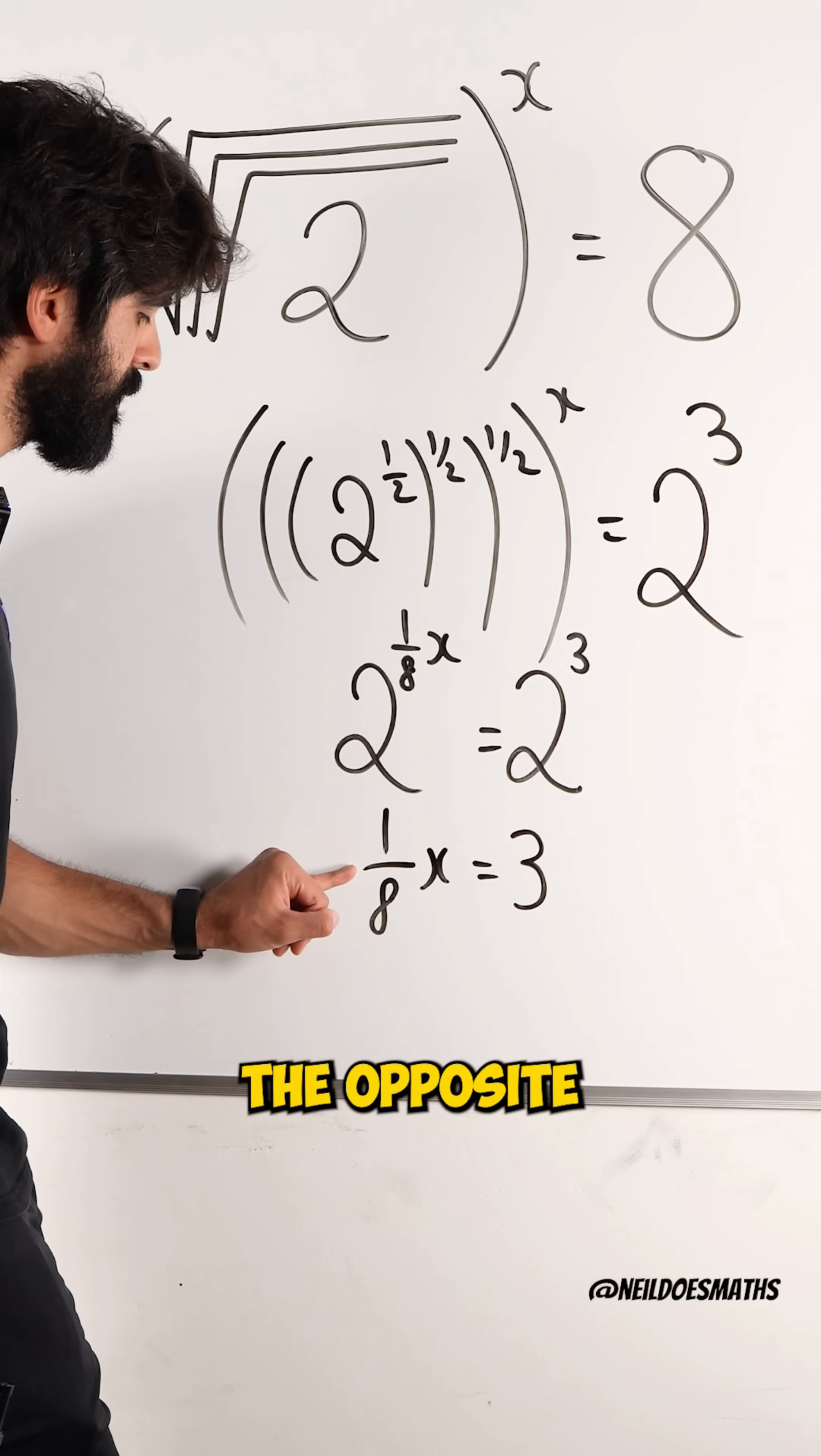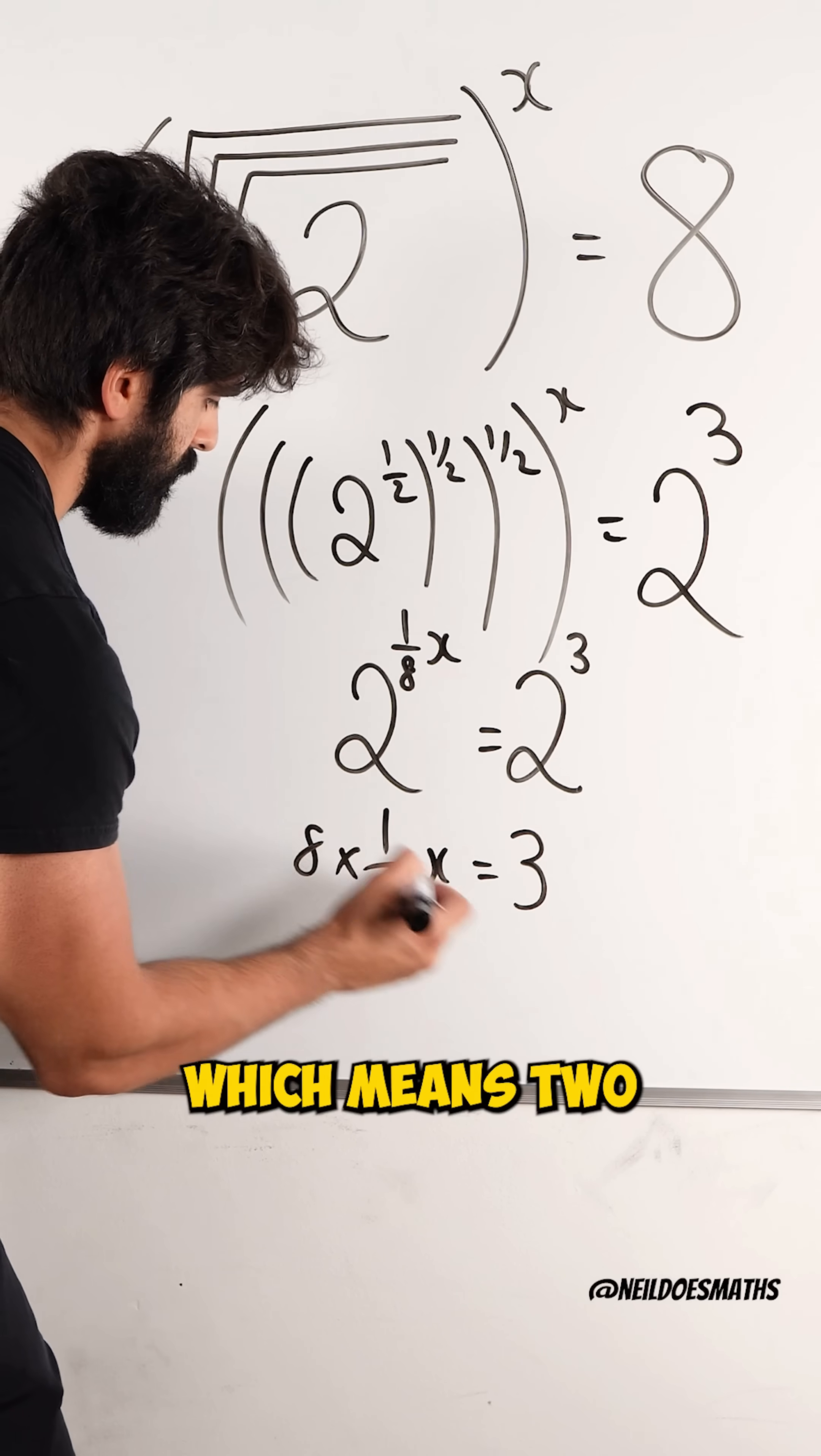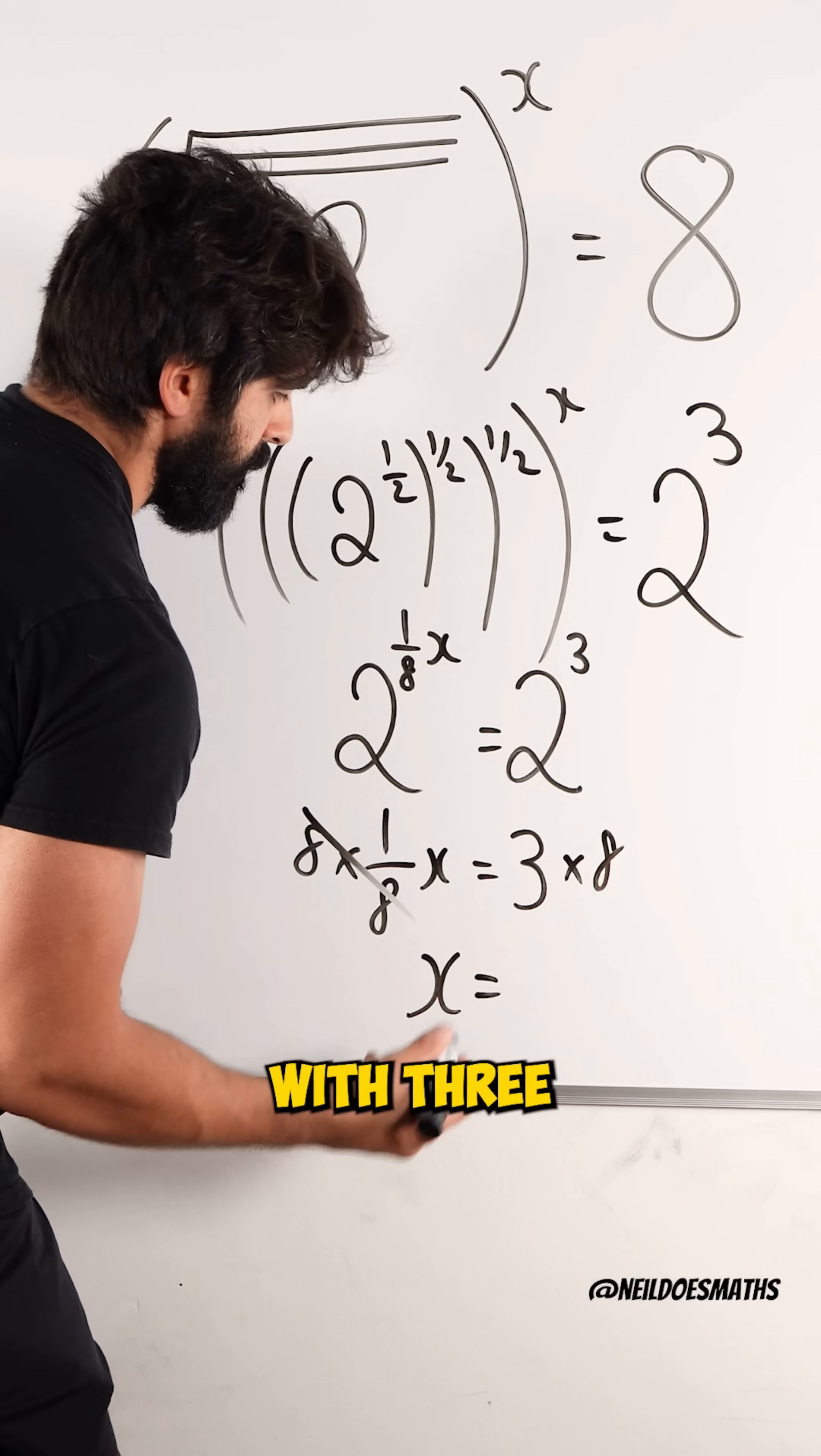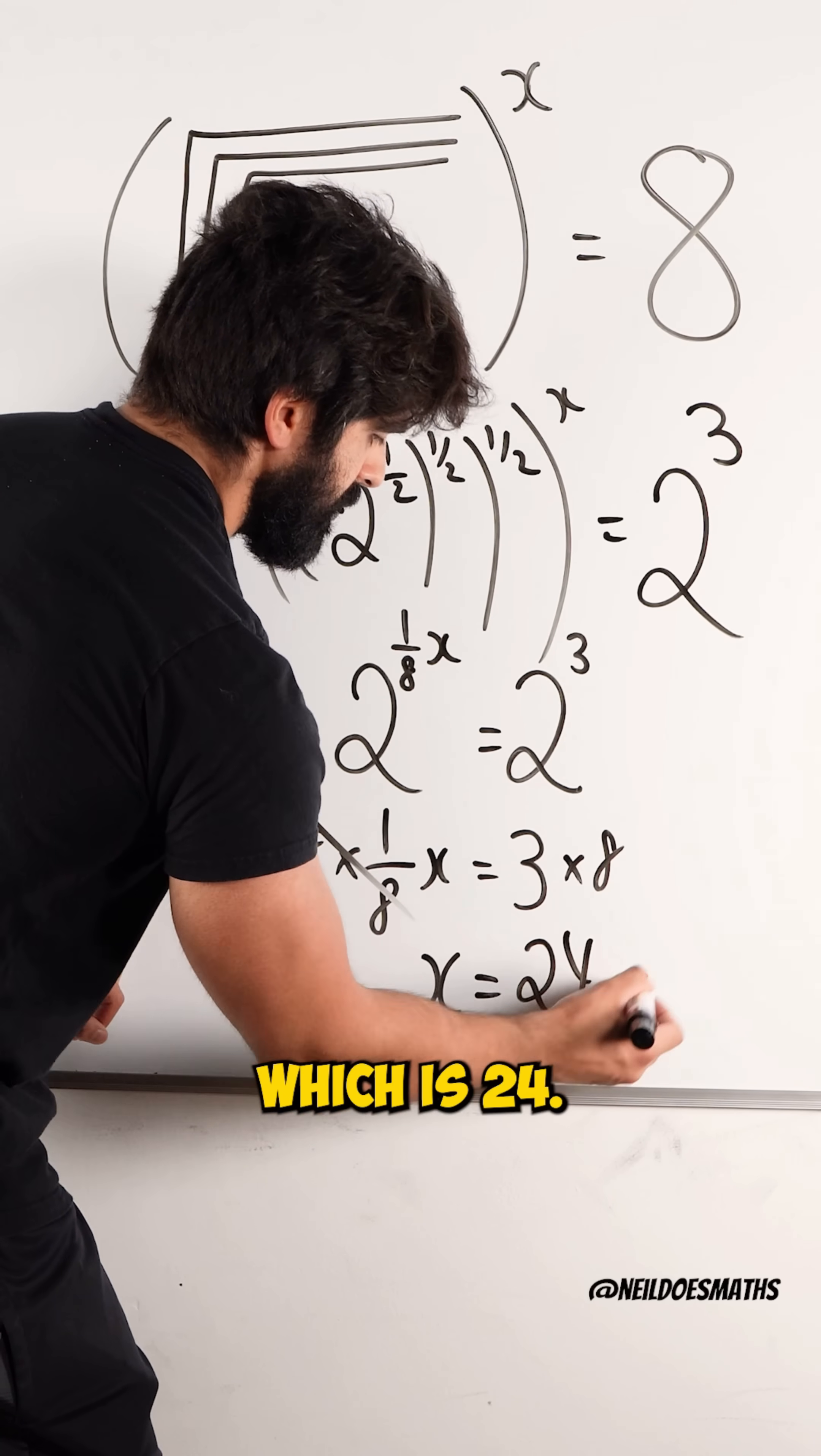So, to rearrange for X, we have to do the opposite of dividing by 8, which means multiply by 8. And we're left with 3 times 8, which is 24.